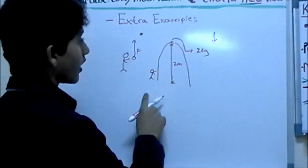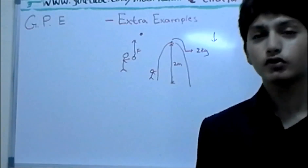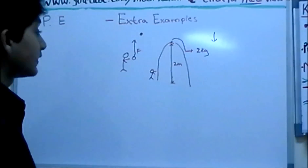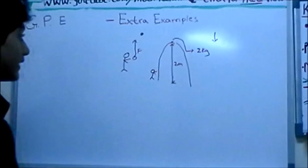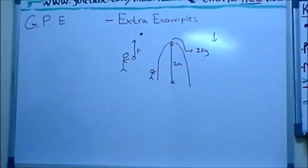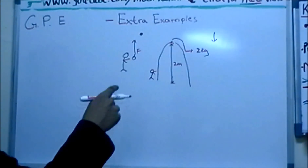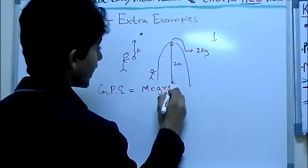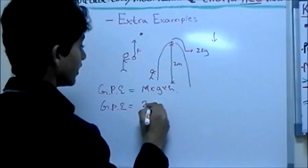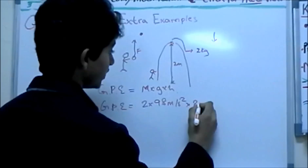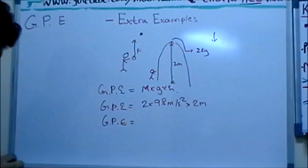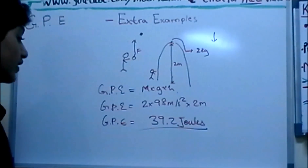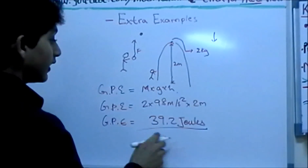How do we find the gravitational potential energy of the ball? People might be confused because the ball is moving constantly, but at its maximum point the ball momentarily isn't moving — it stays there for a millisecond, and then gravity starts acting on it as usual. So at that tiny instant, GPE = m × g × h = 2 kg × 9.8 m/s² × 2 m. The gravitational potential energy equals 39.2 joules. That is the GPE of the ball when it reaches its maximum height.